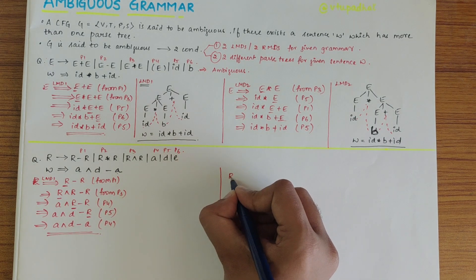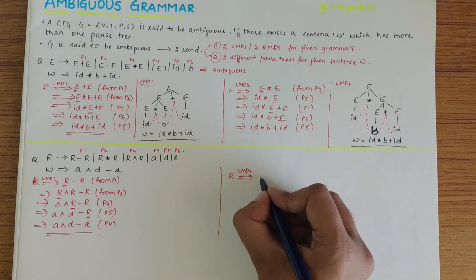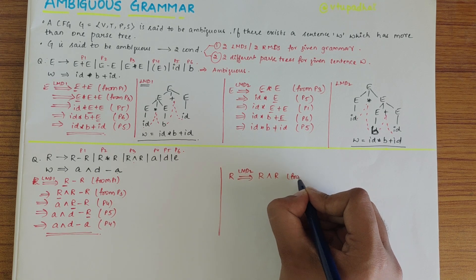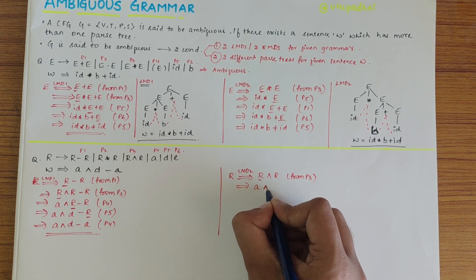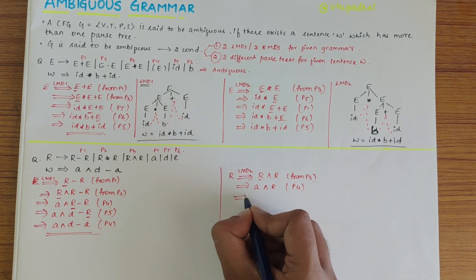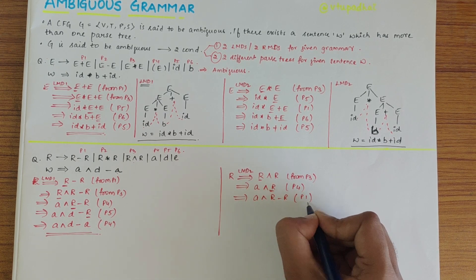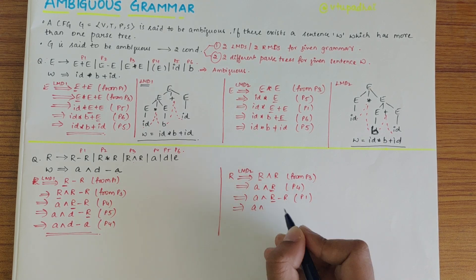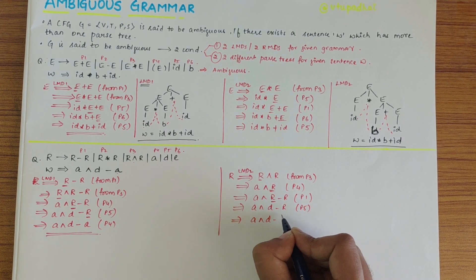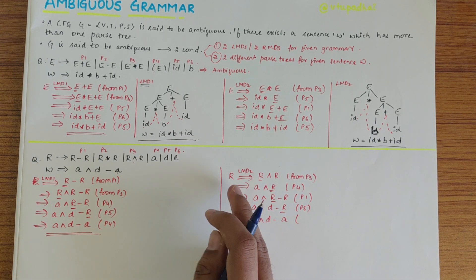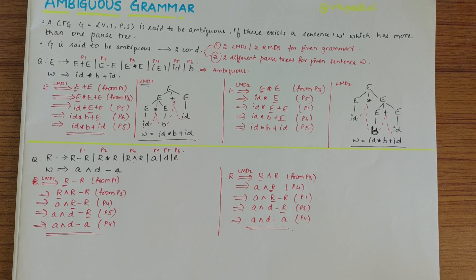For LMD2, we start from production P3. This R is changed to A — from P4. Next this R becomes R-R — from P1. Then A, this R changes to D — from P5 — and this next R changes to A — from P4. We have obtained the same sentence.